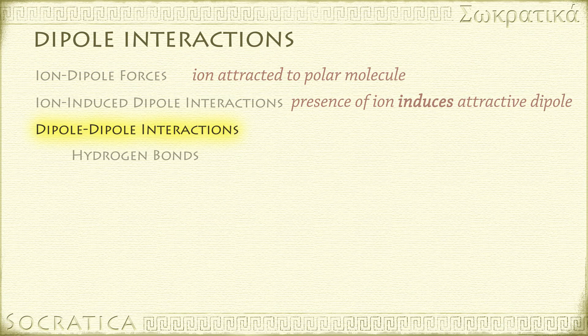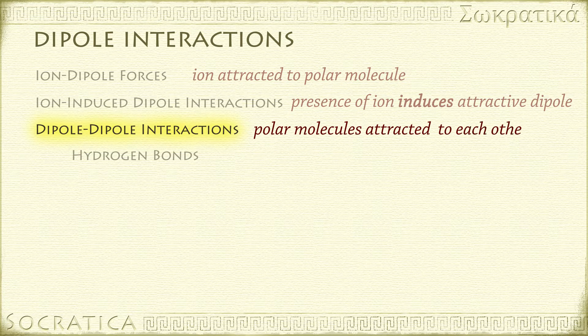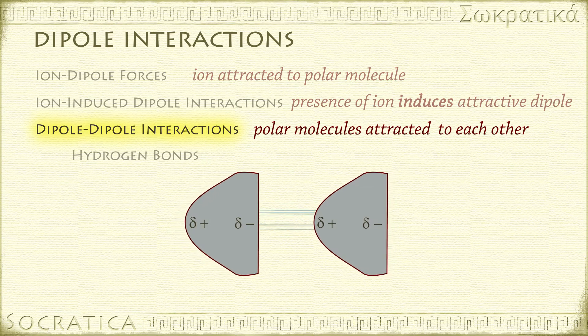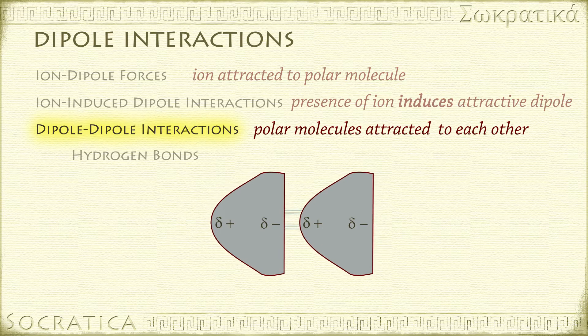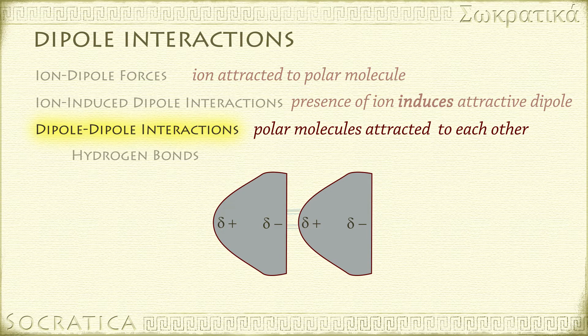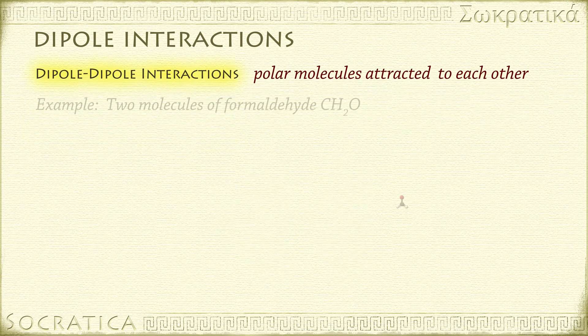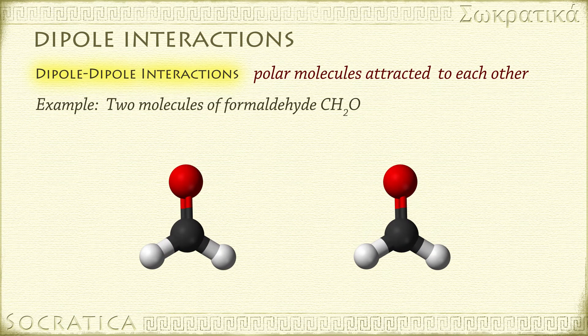Dipole-dipole interactions occur when two polar molecules are very close to each other, and the positive end of one polar molecule is near the negative end of the other molecule. The strength of the attraction increases with increasing polarity. Here, for example, you can see two molecules of formaldehyde, CH2O.